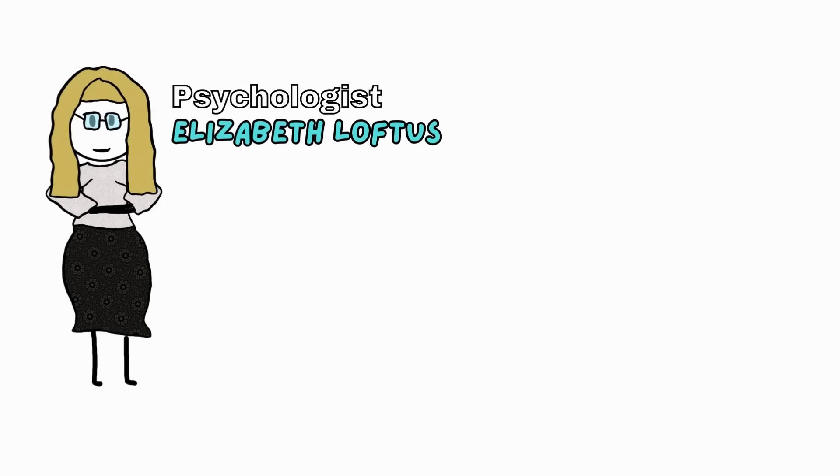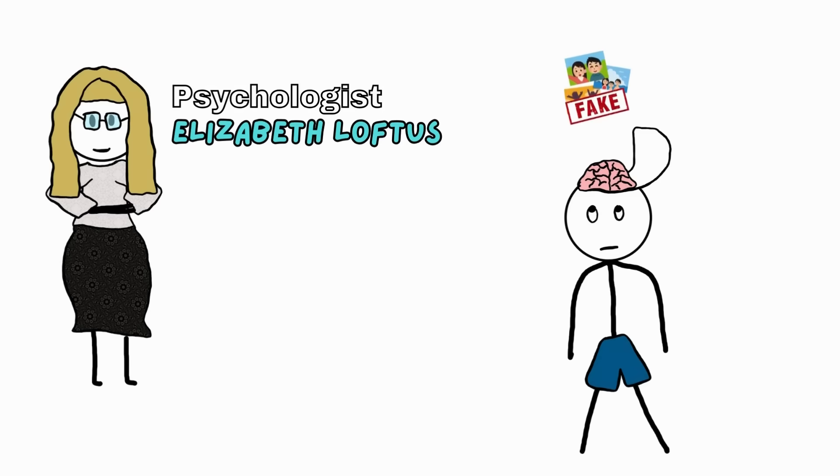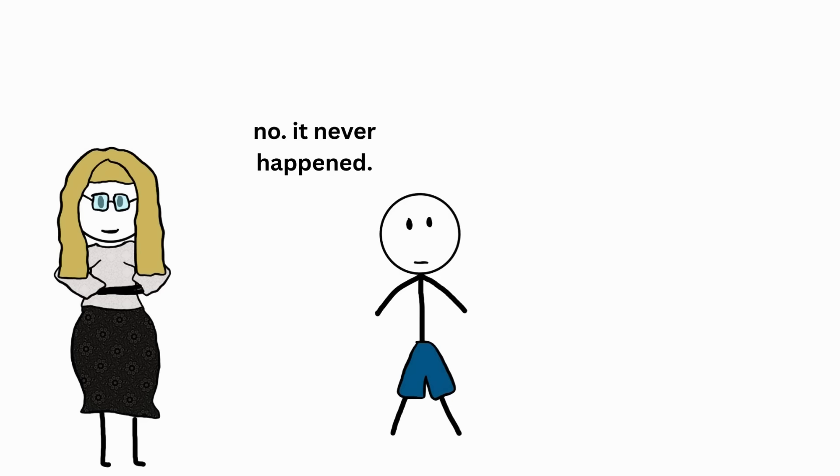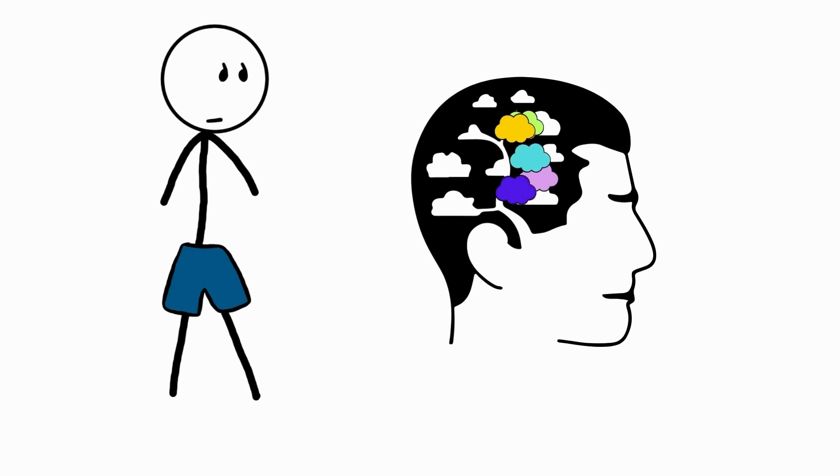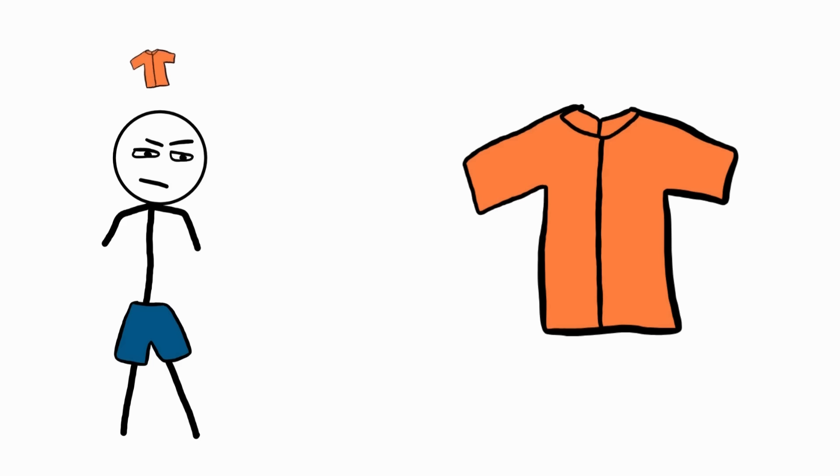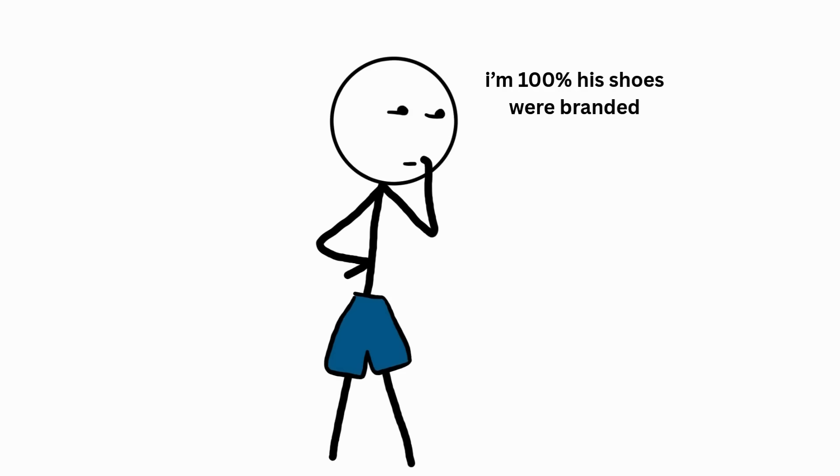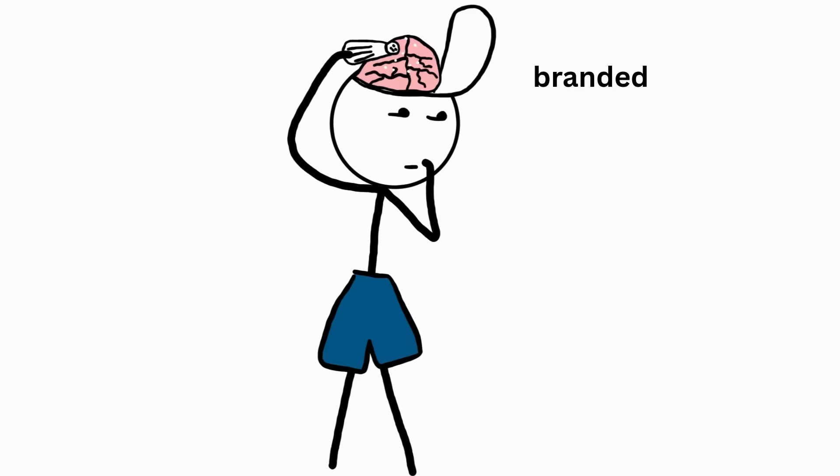Psychologist Elizabeth Loftus has proved how easy it is to implant fake memories in people. In one of her studies, subjects remembered getting lost in a mall as kids, yet it never occurred. Your memory isn't just a recording. It's a remix. And the more you remember something, the more you risk altering it. So, the next time you're 100% you remember something, take it with a pinch of salt.